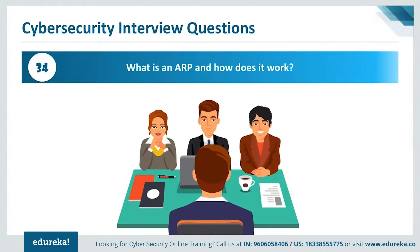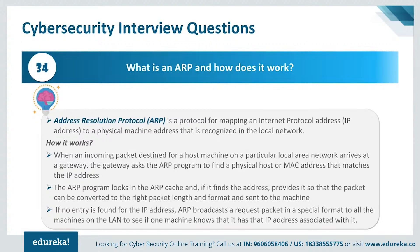Moving on to the next question: what is ARP and how does it work? Address Resolution Protocol, or ARP, is a protocol for mapping an internet protocol address to a physical machine address recognized on the local network. When an incoming packet destined for a host machine on a particular local area network arrives at a gateway, the gateway asks the ARP program to find a physical host or MAC address that matches the IP address. The ARP program looks into the ARP cache, and if it finds the address, it provides it so that the packet can be converted to the right length and format and sent to the machine.